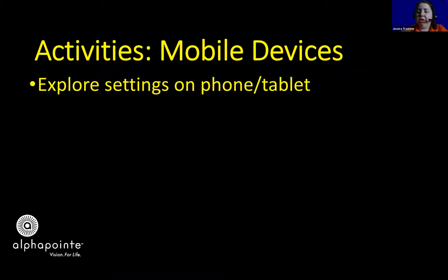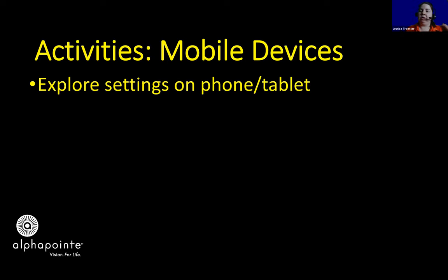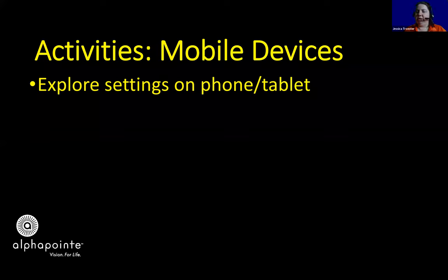These accessibility features should already be available on Android phones, iPhones, and tablets. You can typically find them under Settings, then General and Accessibility. There are also great YouTube videos — search for your device name along with 'low vision' or 'blindness' and you'll find a video or website that can walk you through what's already available on your device.